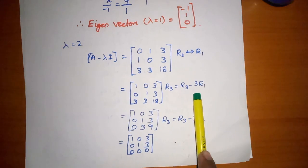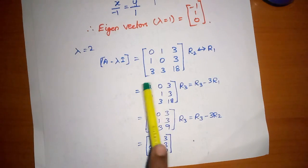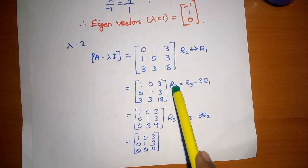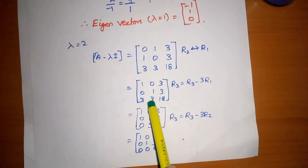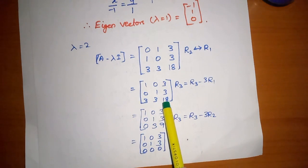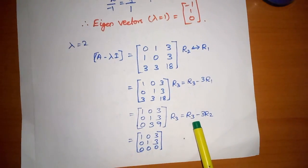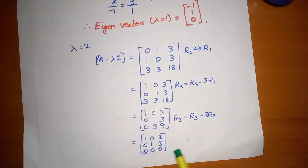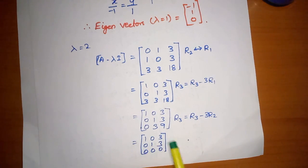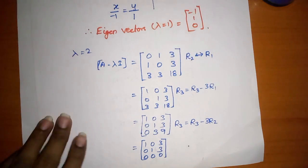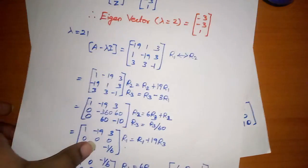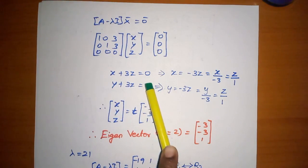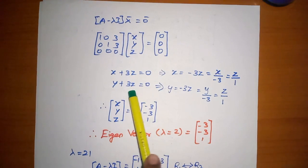For lambda equals 2, apply row reduction. R3 equals R3 minus 3R1: 3 minus 3 is 0, 3 into 3 is 9, so the element becomes 9. Then R3 equals R3 minus 3R2. The final rows are [1, 0, 3; 0, 1, 3; 0, 0, 0]. Multiplying by [x, y, z] gives x plus 3z equals zero and y plus 3z equals zero.